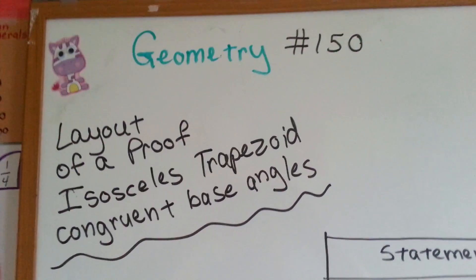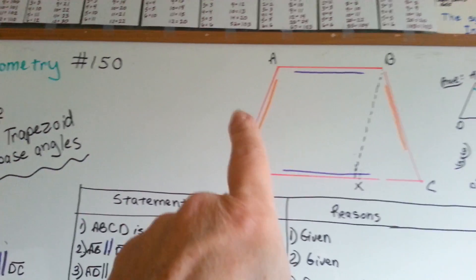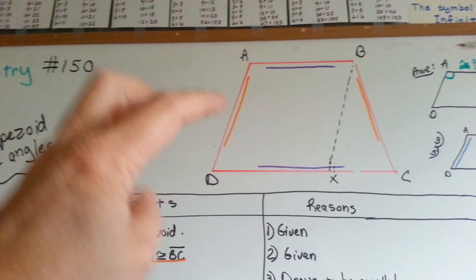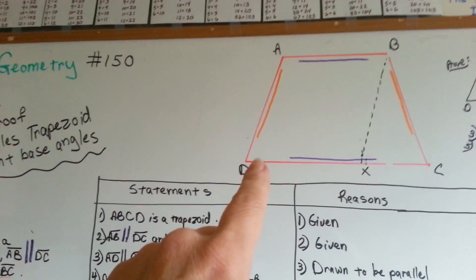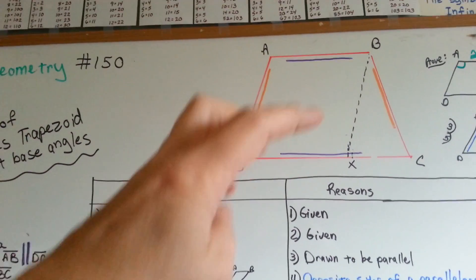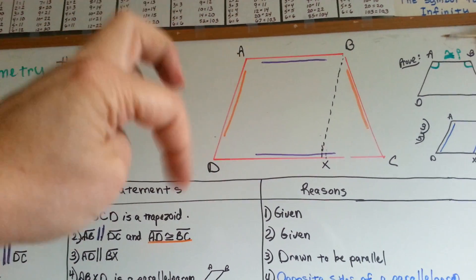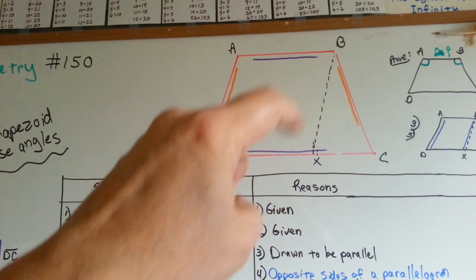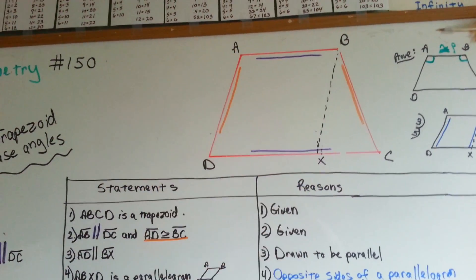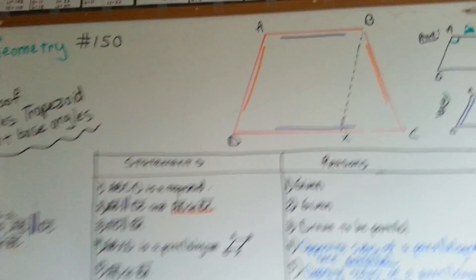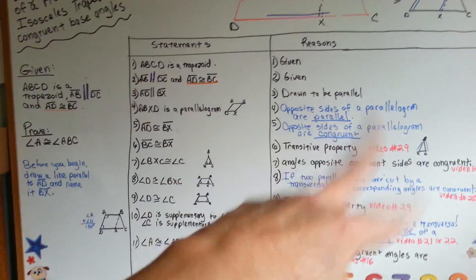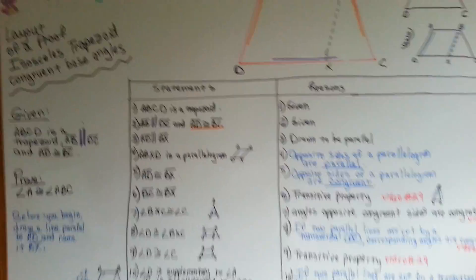We've got a layout of a proof here. We've got our drawing, which I've doctored up a little bit, but basically it's a trapezoid. We've got a line here, AD and BX — an imaginary parallel line we've drawn. We've got our given right here, and we've got our statements and reasons here, and we're going to cover all this.